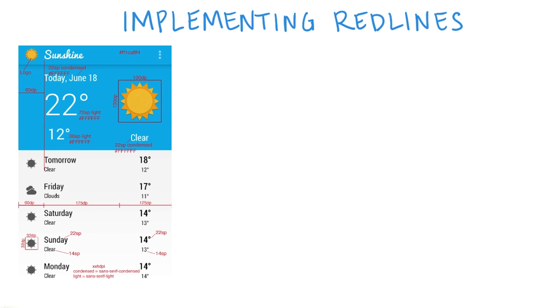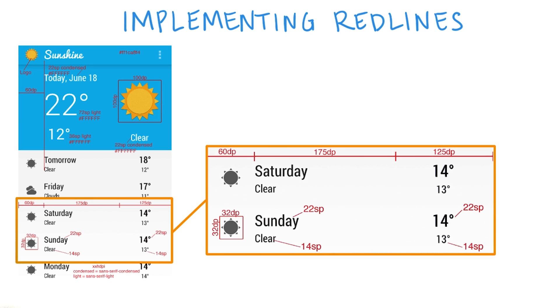It's time to implement the red lines for the main activity. We can do one part together so that you get the hang of it. We begin by styling the list item forecast layout.